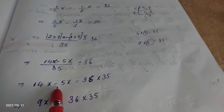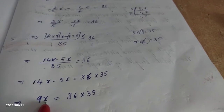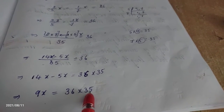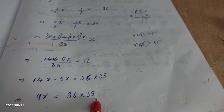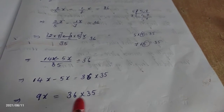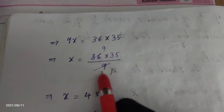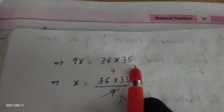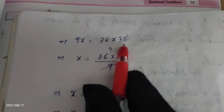14X minus 5X equals 9X. So 9X divided by 35 equals 36. We now need to find X. The 35 on the left side goes to the right side as multiplication, giving 9X equals 36 into 35.